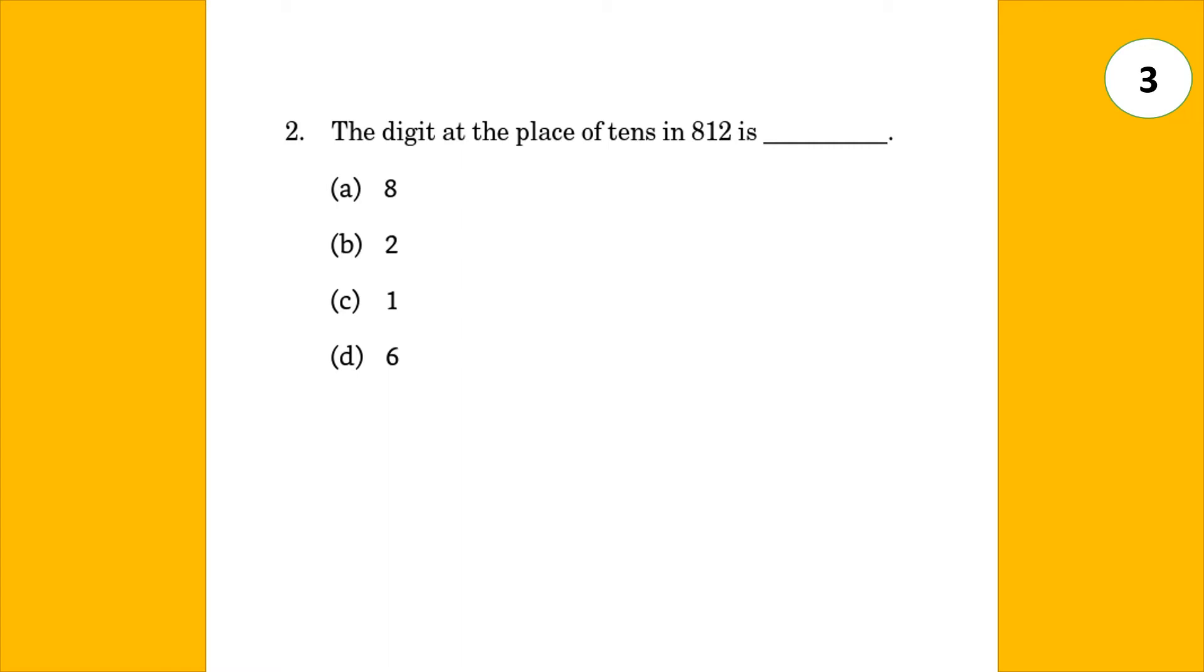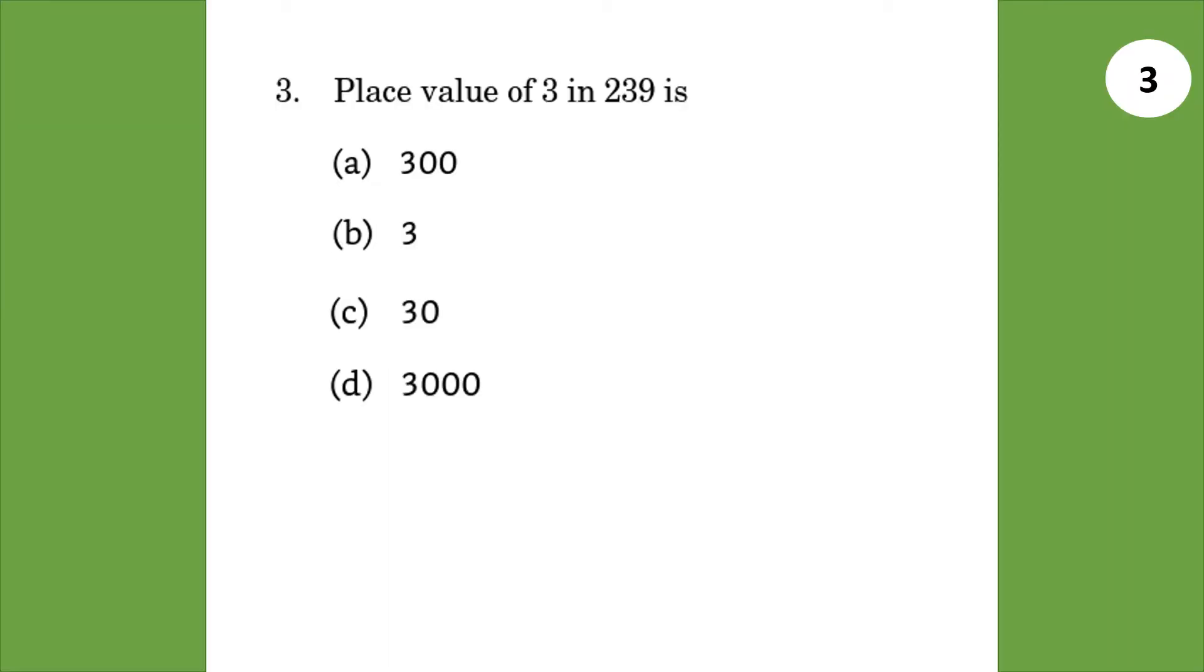The digit at the place of tens in 812 is answer C, 1. Place value of 3 in 239 is answer 30.